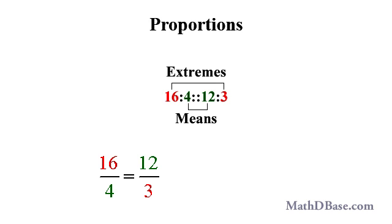In any true proportion, the product of its means is equal to the product of its extremes. 16 times 3 is equal to 48, which is equal to 4 times 12. So the proportion is true.